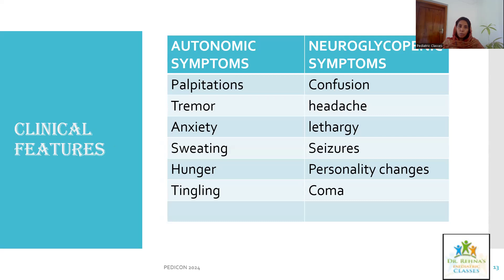Clinically, patients can have autonomic symptoms and neuroglycopenic symptoms. Autonomic symptoms result from activation of counter-regulatory hormones — palpitations, tremor, anxiety, sweating, hunger, tingling, etc. Neuroglycopenic symptoms occur due to decreased glucose supply to the brain — confusion, headache, lethargy, seizures, personality changes, and coma.